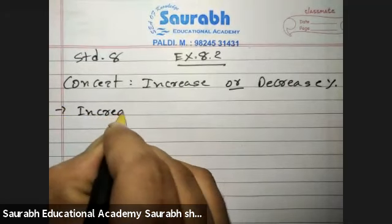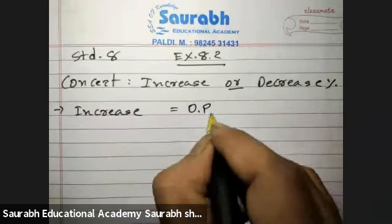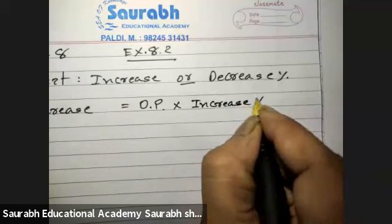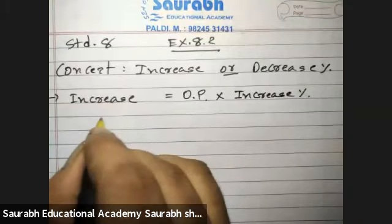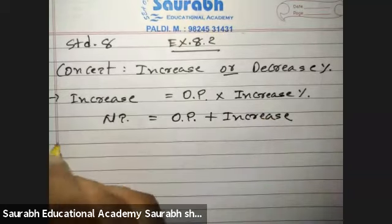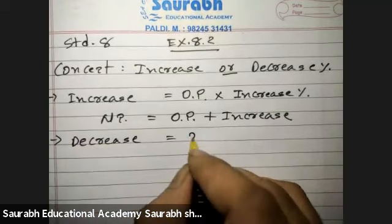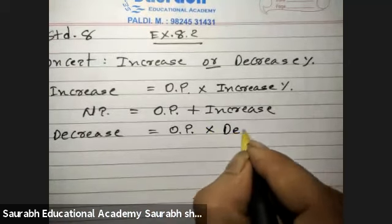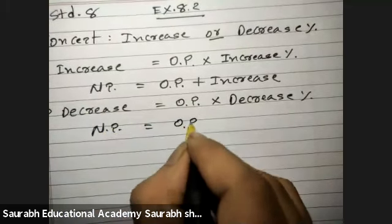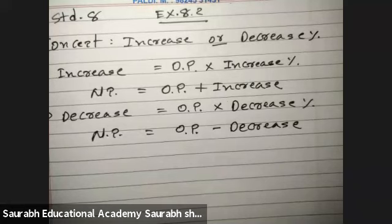For Increase: Increase is equals to Old Price into Increase Percentage, and New Price is equals to Old Price plus Increase. Same way, Decrease is equals to Old Price into Decrease Percentage, and New Price is equals to Old Price minus Decrease. This is the concept of Increase or Decrease Percentage.